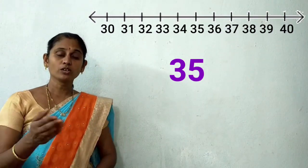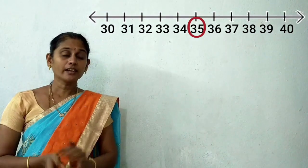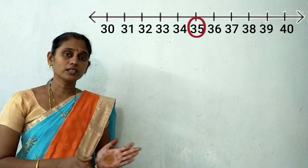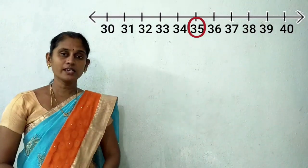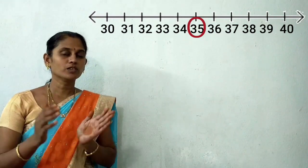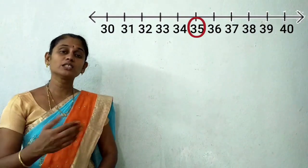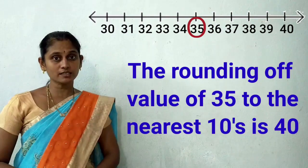Now let's see another example — 35. The number line we have to take is from 30 to 40. The number 35 is exactly at the midway of 30 and 40 on the number line. Exactly in the middle of 30 and 40. Which tens do I take here? Obviously, we will go for the higher tens. Whenever the number is in the middle of the two tens, you should consider the rounding value as the next bigger tens. Here, which is the bigger tens — 30 or 40? Good — 40. So the rounding value of 35 to the nearest tens is 40.